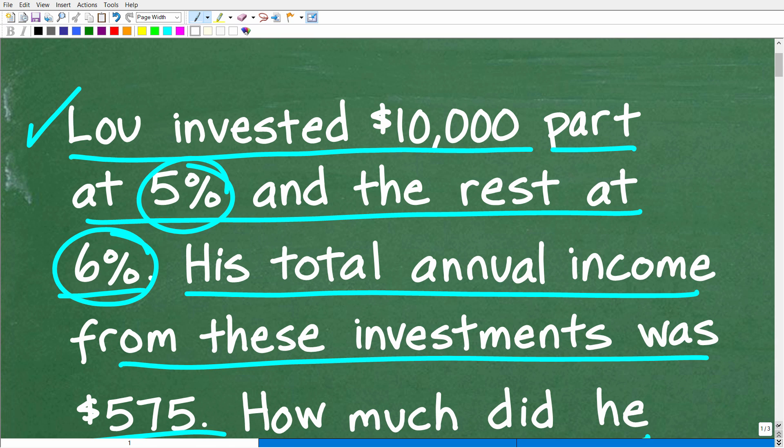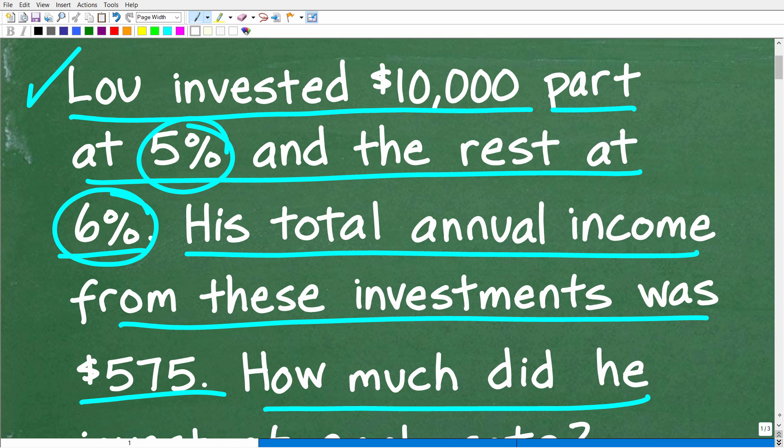All right, now before I show you the answer, let's take one more quick look at the question. So, Lou is investing $10,000, and he's going to put part in a 5% investment and the rest in a 6% investment. Now, his total annual income from these investments is $575. That's how much he made on the combined total of the return on his investment, if you will, ROI.